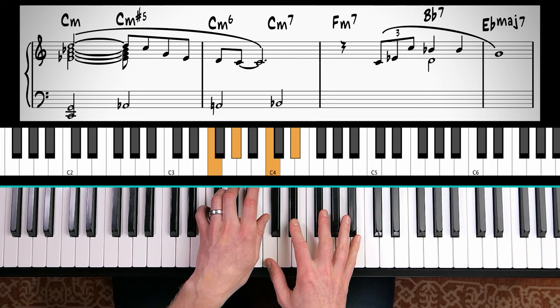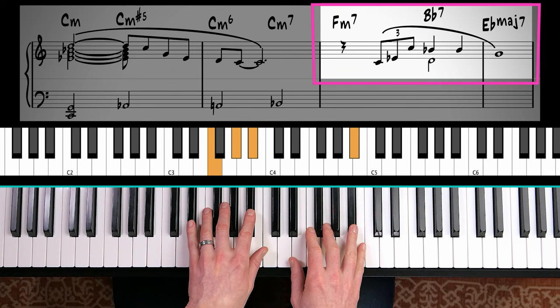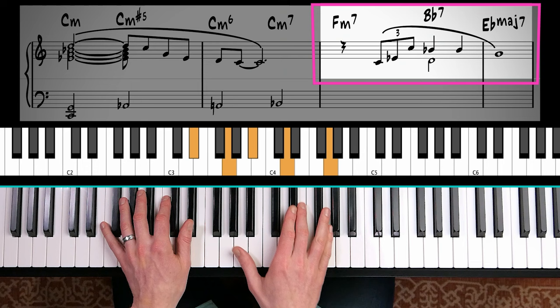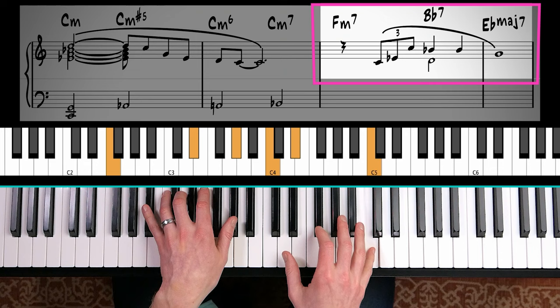Then we have a two, five, one in E flat major. Lots of voicing patterns we could use. We could do simple literal voicings, or we could do shells. Root, seventh, third. That's a shell, root, seventh, third.